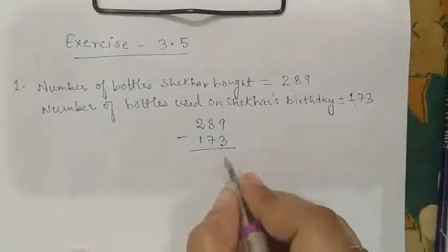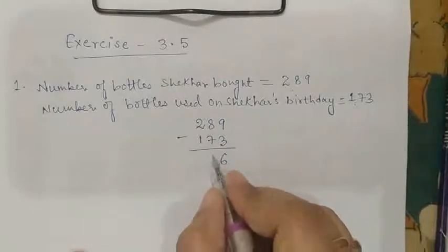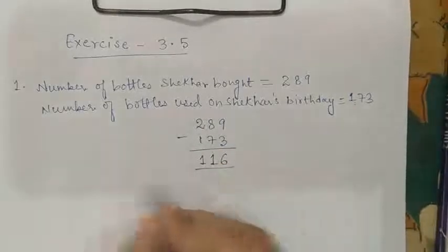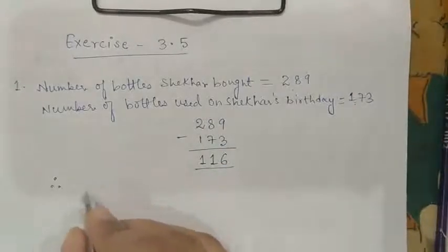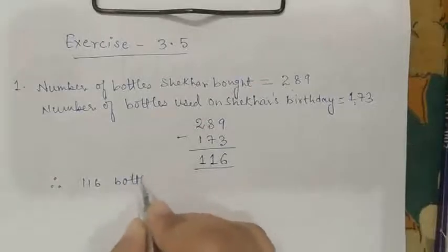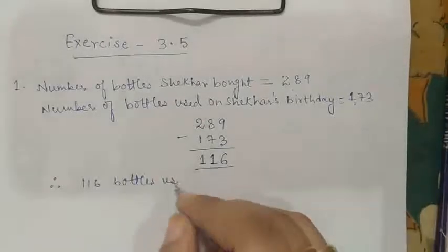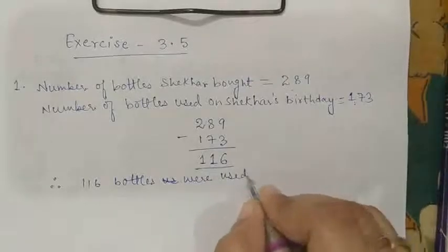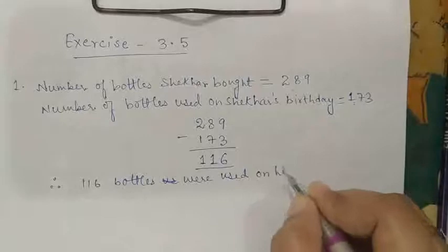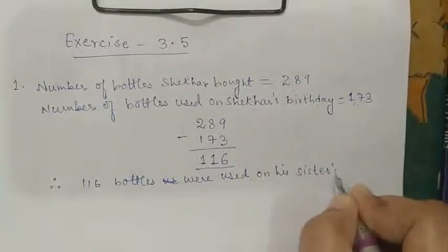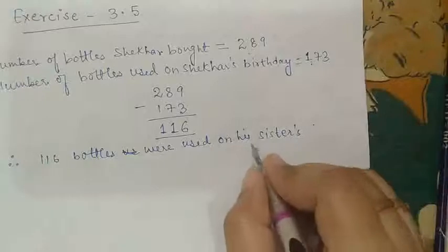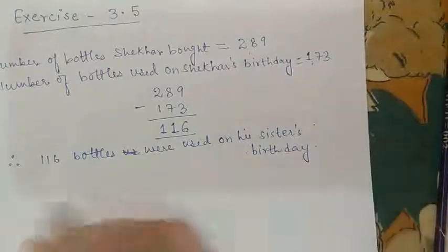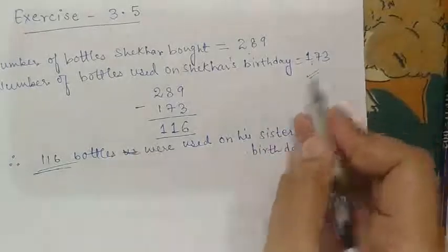9 minus 3 is 6. 8 minus 7 is 1. And 2 minus 1 is 1. Therefore, 116 bottles were used on his sister's birthday. 116 bottles were used on his sister's birthday. So he used more bottles than his sister.